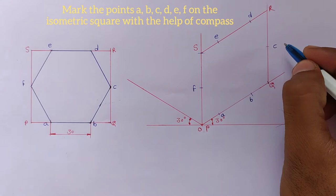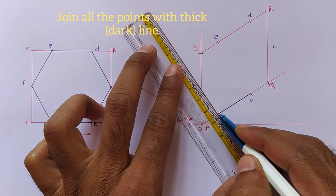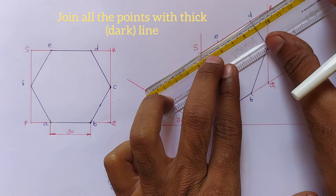Now we should join all these points. DC. CD. DE. And EF. This is the isometric hexagonal.